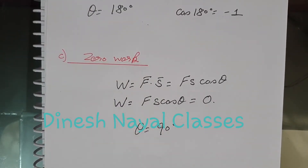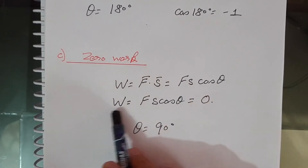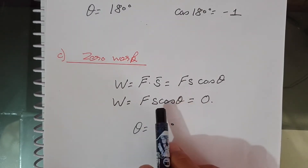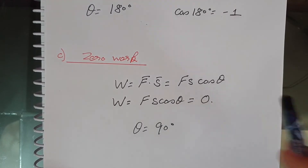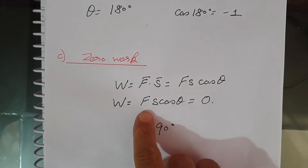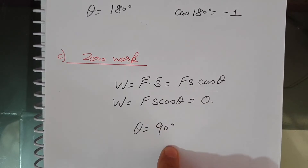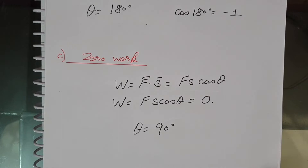For zero work: W = Fs cosθ = 0, which means either force is zero, displacement is zero, or cosθ = 0 (i.e., theta = 90°). For example, when we fail to move a heavy stone, work done is zero because displacement is zero. When a coolie carries a load on his head and moves on a horizontal platform, theta is 90 degrees, so work done by the coolie is zero. Similarly, a person carrying a briefcase on a horizontal road does zero work.